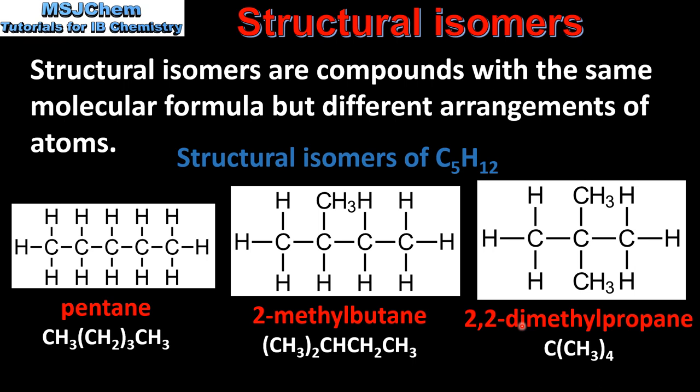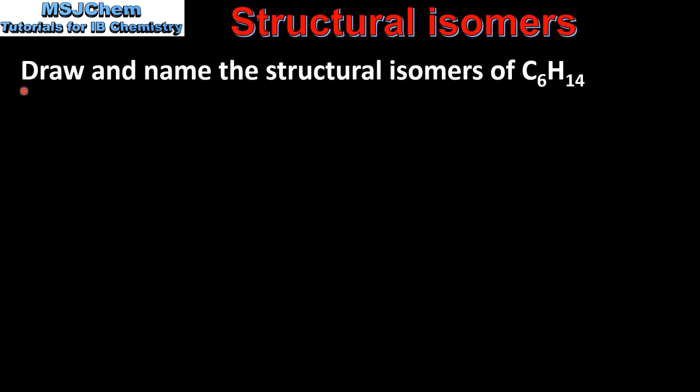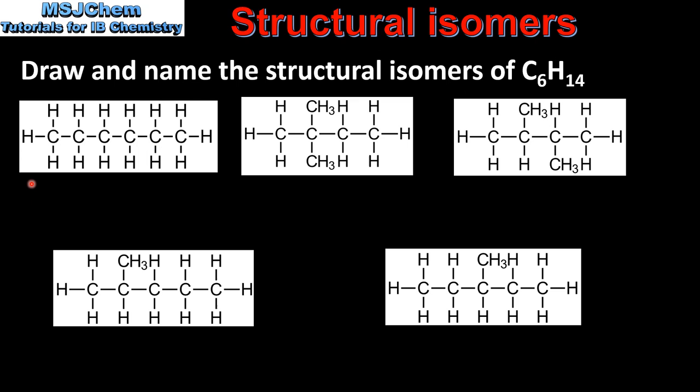In the next example we'll draw and name the structural isomers of C6H14. And here they are. We have five isomers, each with the same molecular formula but different arrangements of atoms.